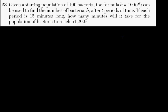Problem number 23 says: given a starting population of 100 bacteria, the formula B equals 100 times 2 to the t can be used to find the number of bacteria B after t periods of time. If each period is 15 minutes long, how many minutes will it take for the population of bacteria to reach 51,200?